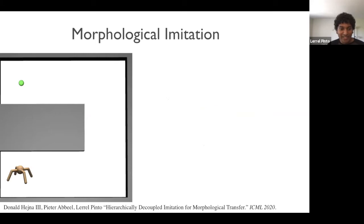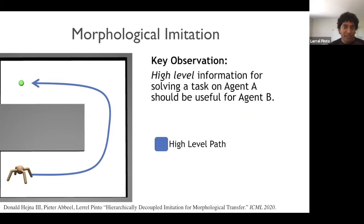So one insight is that if an agent needs to reach a goal, the high-level path it would take to reach the goal is usually the same. So for example, if the agent starts from here and needs to end at the green dot, the way it would go at the high level would be very similar if it was an ant or a quadruped or a point mass. And so if we can leverage the high-level information for solving a task on agent A, it should be useful for solving the same task on agent B.